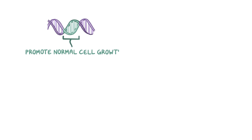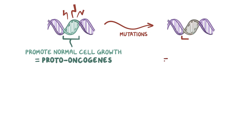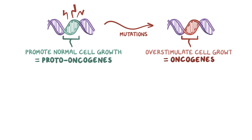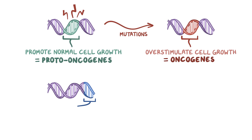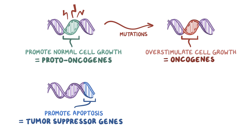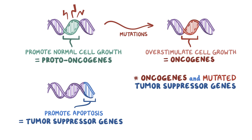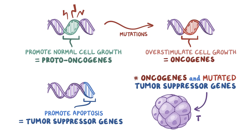There are genes that promote normal cell growth called proto-oncogenes. With mutations, proto-oncogenes become oncogenes, and these overstimulate cell growth. To balance out cell growth, there are other genes called tumor suppressor genes, which promote apoptosis, or cell death, of mutated cells. So oncogenes, or mutated tumor suppressor genes, allow cells to keep growing uncontrollably, resulting in tumors.